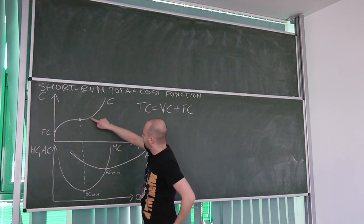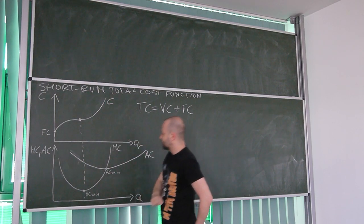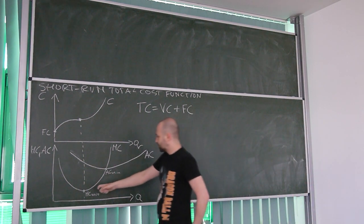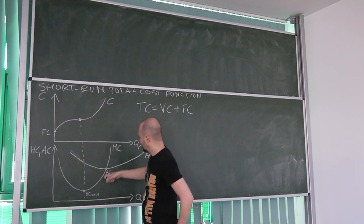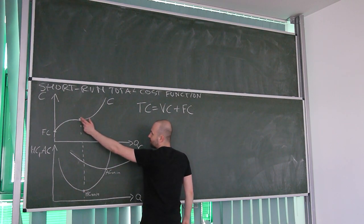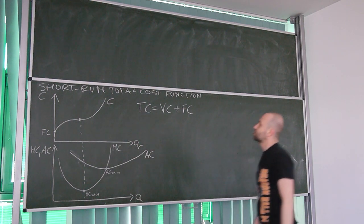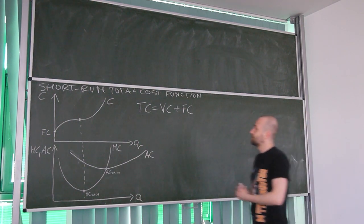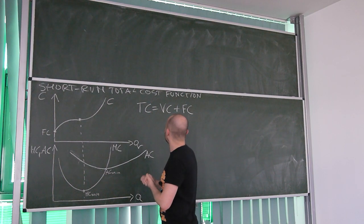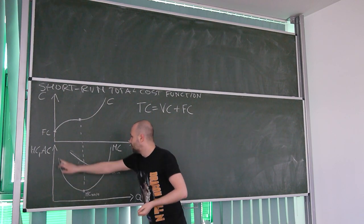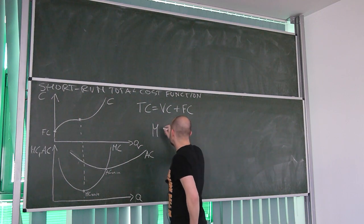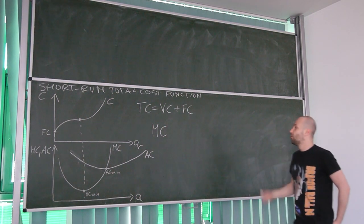At this point the function is increasing more than proportionally, which means that marginal cost must have a positive slope. And of course we see that this point, corresponding to the inflection point of the short-run total cost function, is the minimum of the marginal cost. Now, what is marginal cost? This is the cost of producing one additional unit.